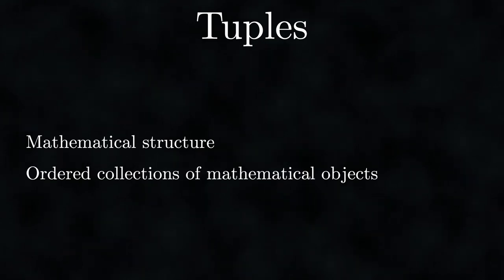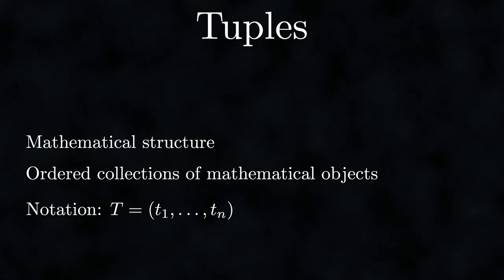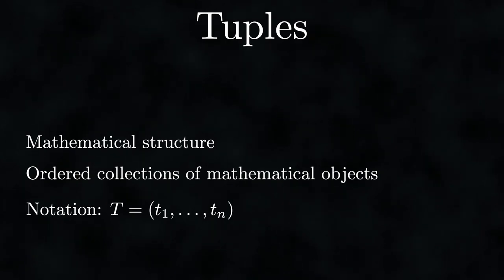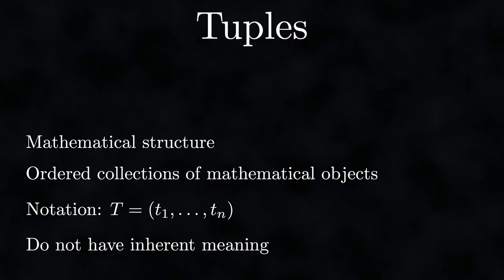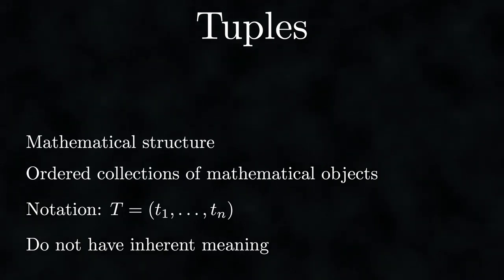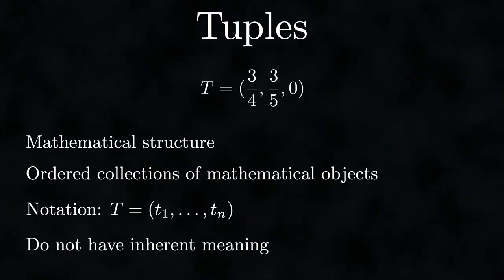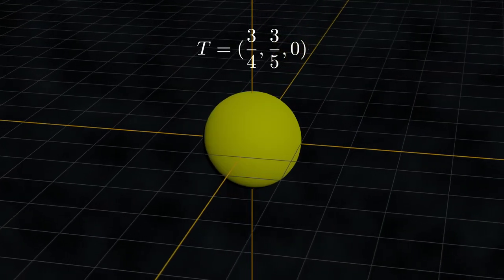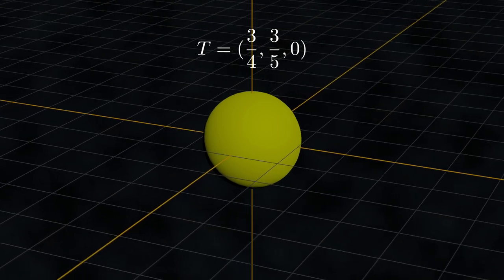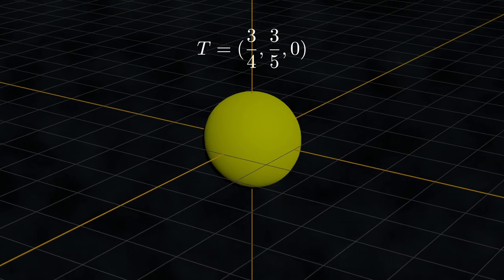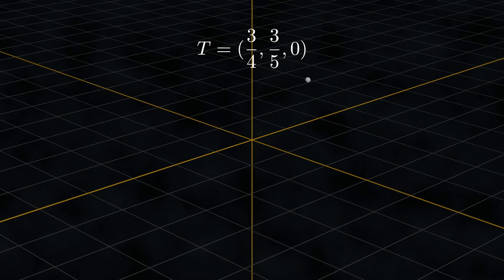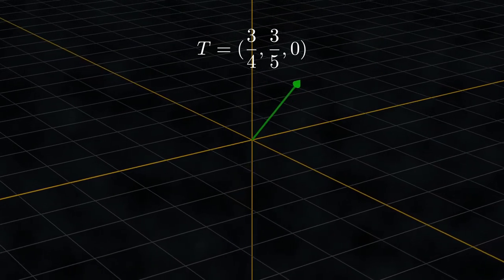Just combining numbers with arithmetic operations doesn't give us much creative freedom, so let's introduce a handy tool. A tuple is a mathematical structure that lets us group objects in an organized manner. Tuples are denoted with standard braces and their elements are separated by commas. Each element can be any mathematical object, even another tuple. Inherently, tuples don't represent anything specific — it is about the meaning you assign to them. For example, a tuple of three real numbers could be interpreted as a color, a point in 3D space, or a direction vector.